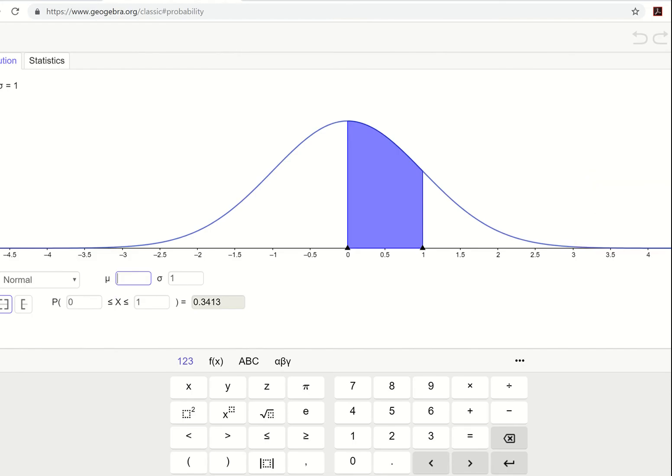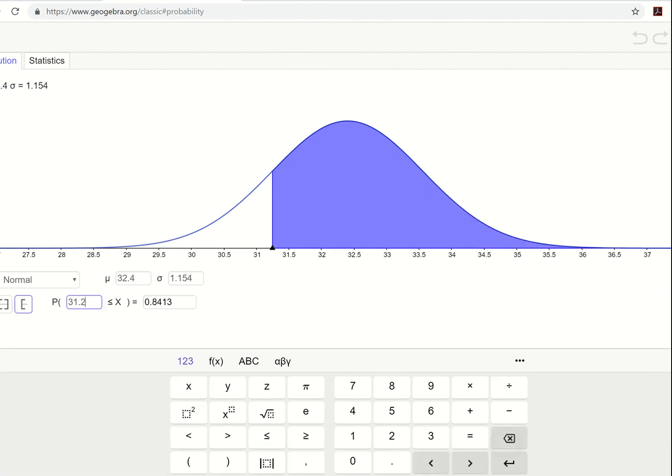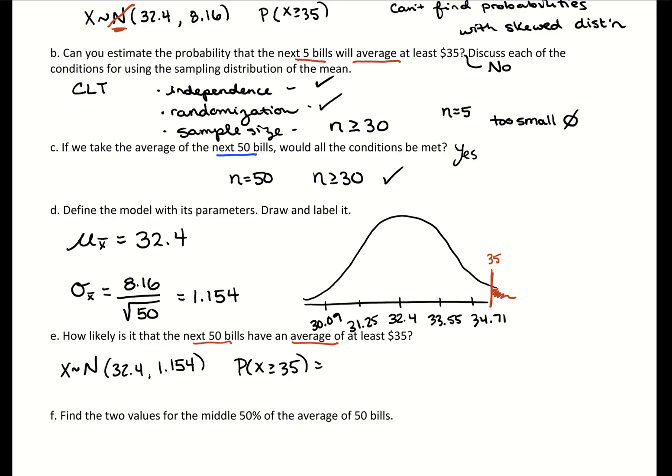Let's go to GeoGebra to get an exact value. Set my mean to 32.4, standard deviation 1.154, and then we want to be going to the right of 35, which is 0.0121. So there is a 1.21% chance the next 50 bills have an average of at least $35.